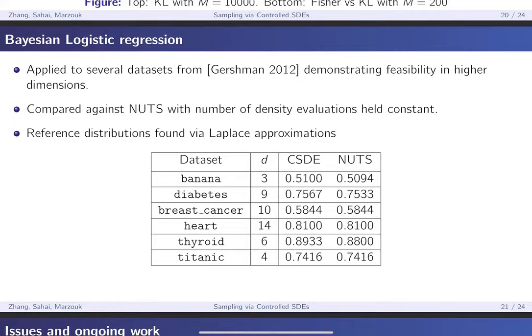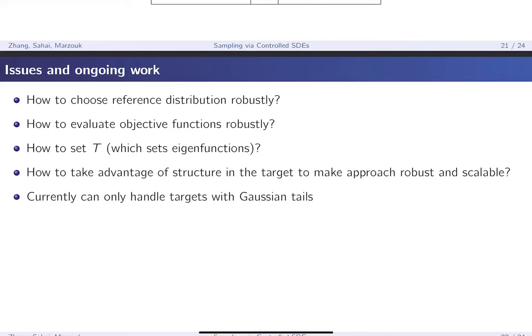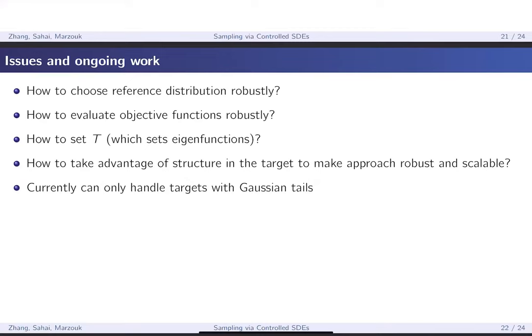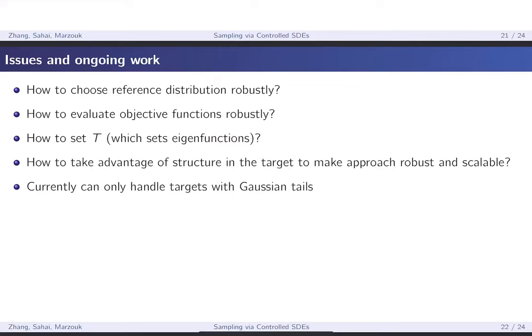This is very much ongoing work. Some issues include: how to choose a reference distribution robustly — the method can be quite sensitive to this choice. Another problem is evaluating the objective function: sometimes a reference distribution that's good for the SDE may not be good for evaluating the objective function. We also haven't fully investigated how to set T, which is intimately linked to what the eigenfunctions look like because it affects what B looks like.